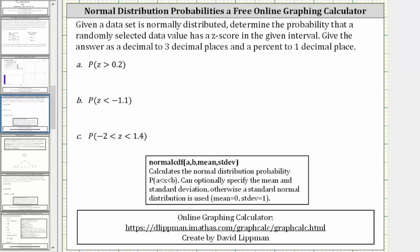This video will show how to use the free online graphing calculator below to determine normal distribution probabilities. Given a data set is normally distributed, determine the probability that a randomly selected data value has a z-score in the given interval. Give the answer as a decimal to three decimal places and a percent to one decimal place.